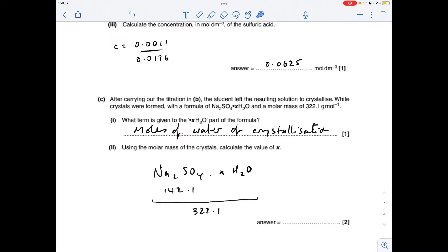Moving on to the last part, so the MR of this hydrated salt is 322.1, the mass of the sodium sulfate part is 142.1, so the dot XH₂O part must have a mass of 180. Each H₂O has an MR of 18, so 180 divided by 18 is obviously 10.